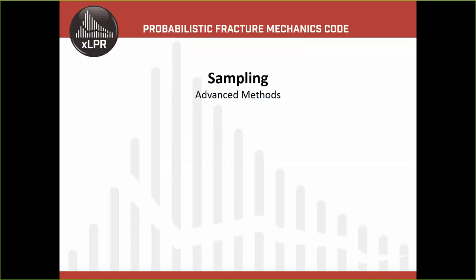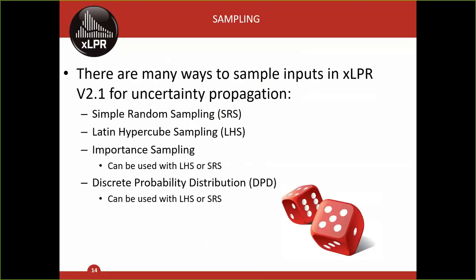Now I'll jump into a couple of topics related to sampling. There are several sampling methods available within XLPR. These options are available for both epistemic outer and aleatory inner loops. First, the user chooses between simple random sampling and Latin hypercube sampling. Then, the user can decide whether to apply importance sampling to one or several inputs. Additionally, the user has the option to apply a discrete probability distribution.